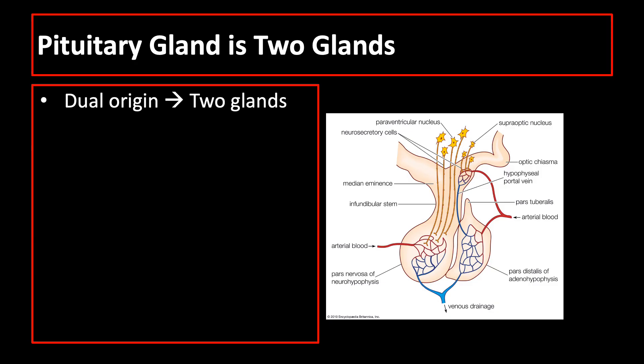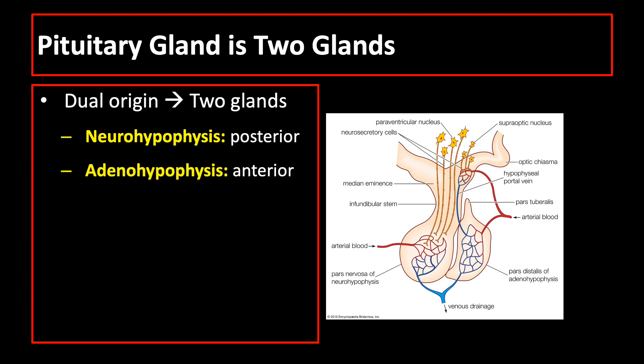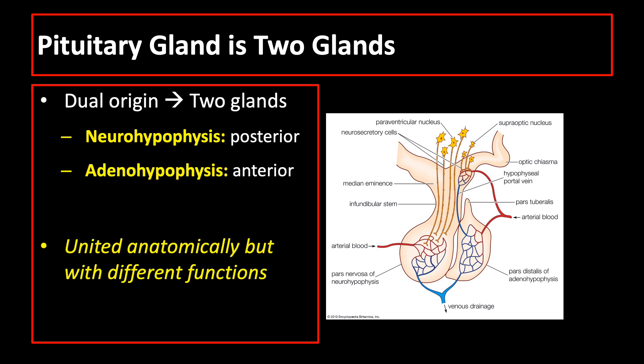The two glands of the pituitary gland — the neurohypophysis and the adenohypophysis — are anatomically united, but since they arise from two different origins, they have different functions. Let us discuss the histology of the adenohypophysis and neurohypophysis in detail.